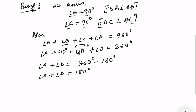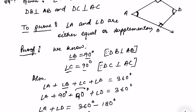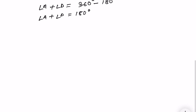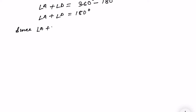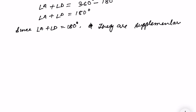Since the sum of angle A plus angle D equals 180 degrees, and if the sum of two angles is equal to 180 degrees, then they are supplementary. So angle A and angle D are supplementary angles.